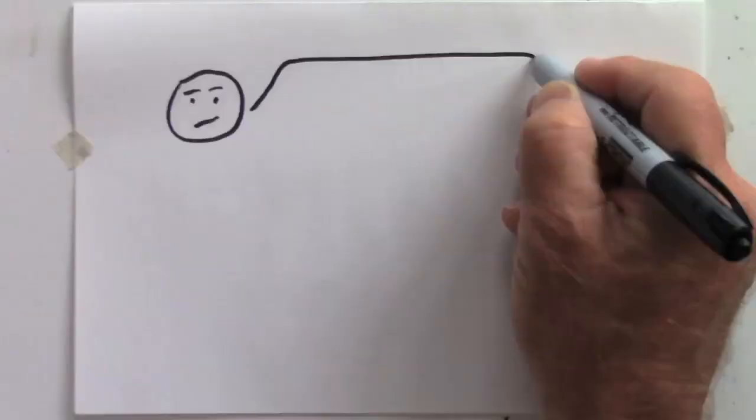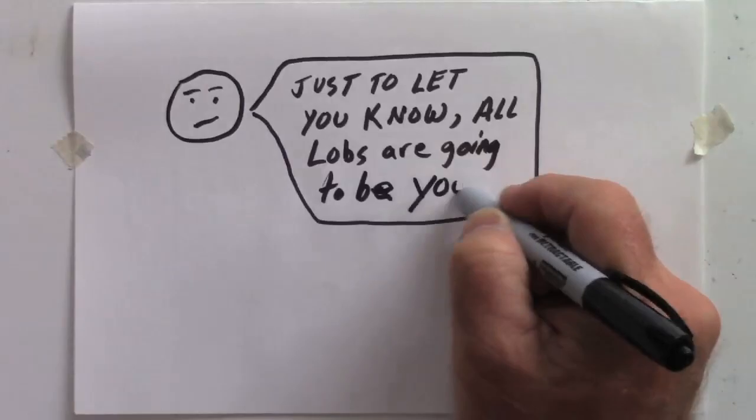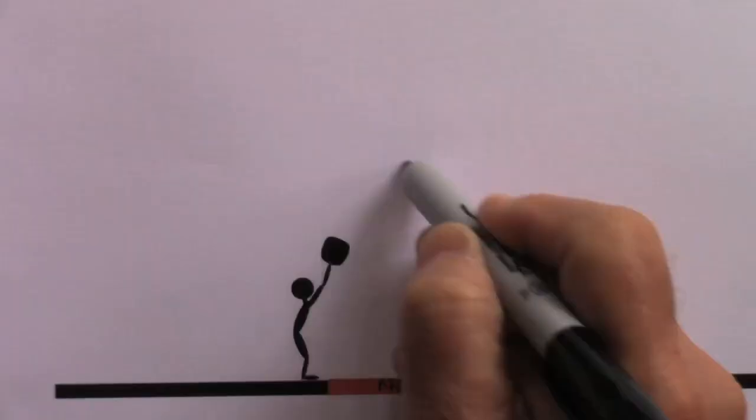If you never plan to go back for a lob, let your partner know ahead of time. If you see that a lob is going to get past you that you can't get, quickly yell yours.